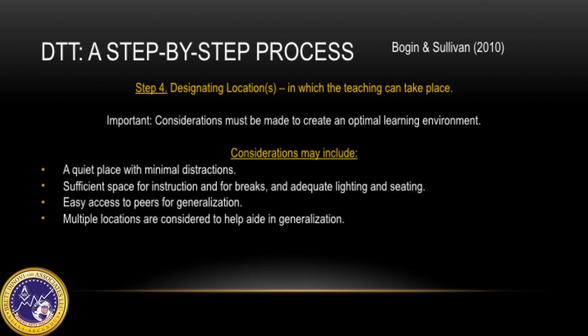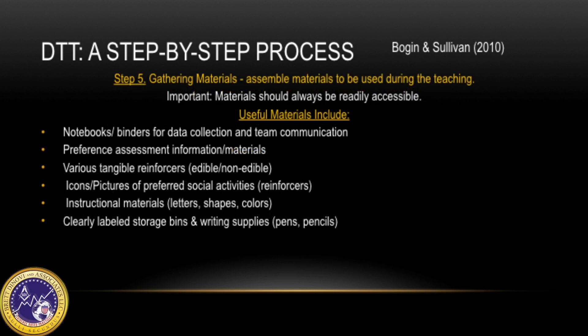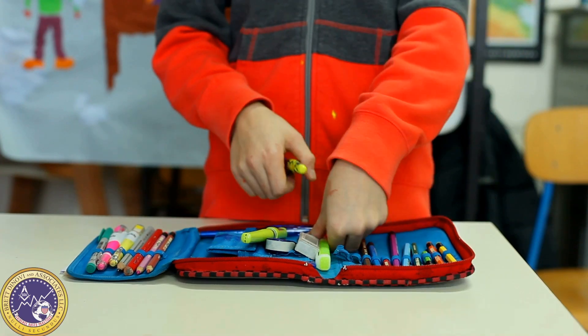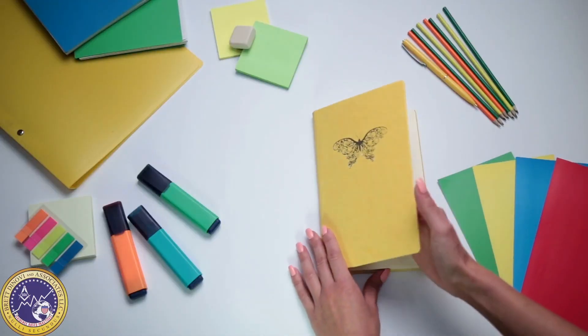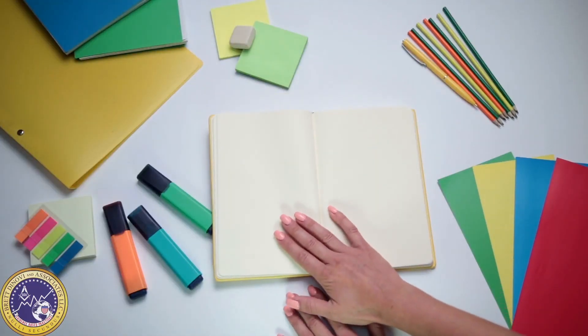Step four is designating a location in which teaching can take place. This step provides considerations for an optimal learning environment within a discrete trial program. Step five is gathering materials — assemble materials to be used during the teaching. A list of materials needed to run an efficient discrete trial program is provided, and all materials should be readily available and easy to use.